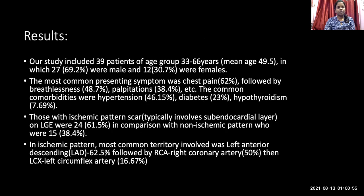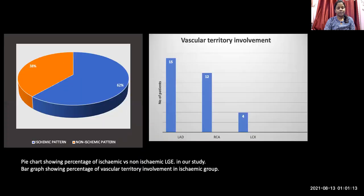Our study included 39 patients with a mean age of 36 years, of which 27 were male and 12 were female. The most common presenting symptom was chest pain, followed by breathlessness and palpitation. The most common comorbidity was hypertension, followed by diabetes and hypothyroidism. Those with ischemic pattern scars were 24, representing 62% of total cases, and 38% of total cases showed a non-ischemic pattern.